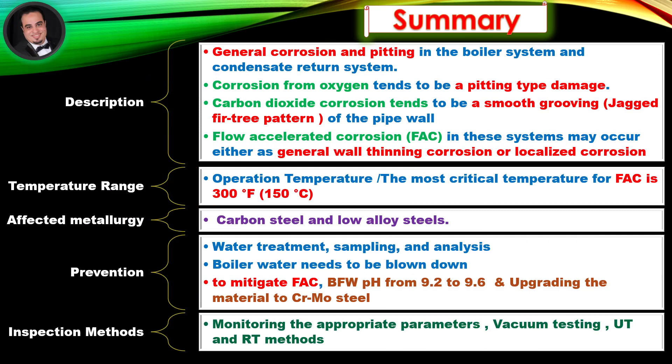Summary — Description. General corrosion and pitting in the boiler system and condensate return system. Corrosion from oxygen tends to be a pitting type damage. Carbon dioxide corrosion tends to be a smooth grooving, jagged fir tree pattern of the pipe wall. Flow accelerated corrosion in these systems may occur either as general wall thinning corrosion or localized corrosion.